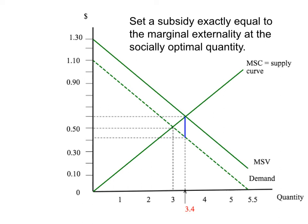Why is this a good solution? Compared to the quantity restriction, we don't need any sweat police now. If the government puts a 20 cent subsidy on deodorant, the market will do the rest — it will automatically lead to the right quantity being bought and sold. Secondly, the government doesn't have to know the socially optimal quantity. It still needs to know what the positive externality due to a squirt of deodorant is, but that's 20 cents, which is much easier for the government to find out. If the government can estimate the size of the positive externality, it can set the subsidy and let the market fix the problem for itself.